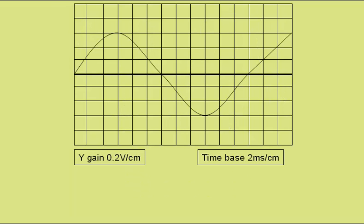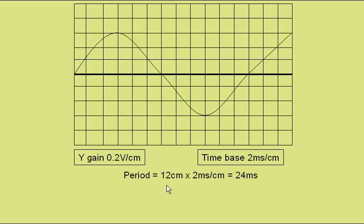Finally, this trace has a time base setting of 2 milliseconds per centimetre, and the time period from here to here is 12 centimetres, giving a time period of 12 centimetres times 2 milliseconds per centimetre, or 24 milliseconds. The frequency is 1 over time period, which is 42 hertz.